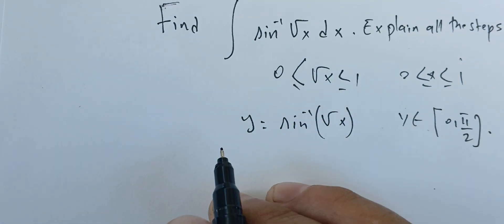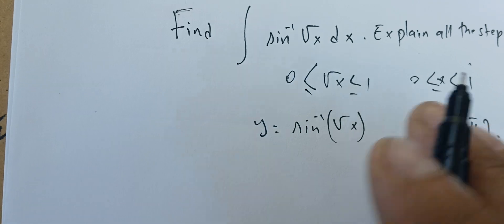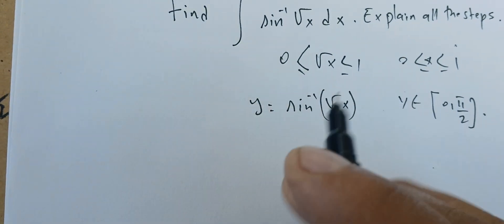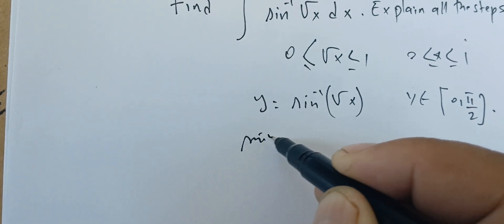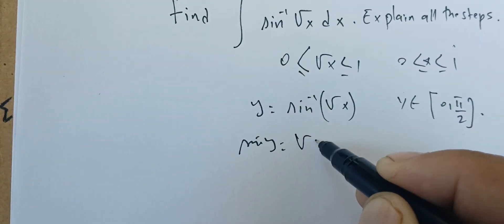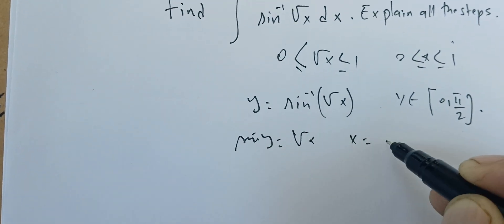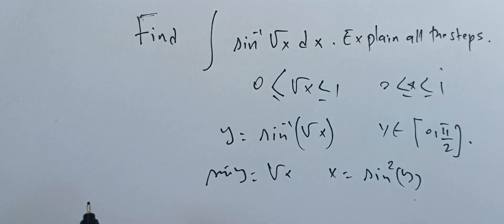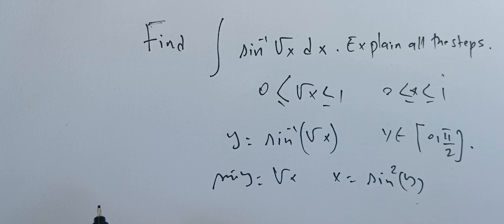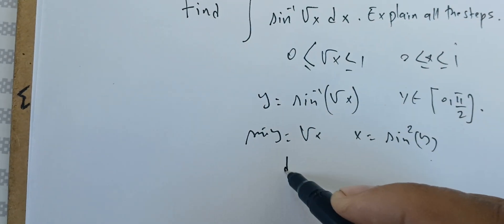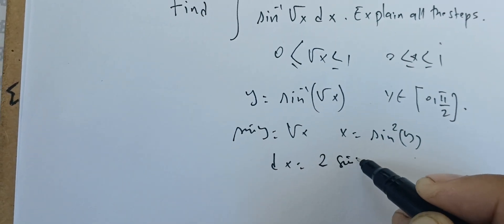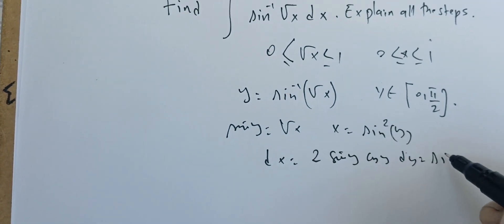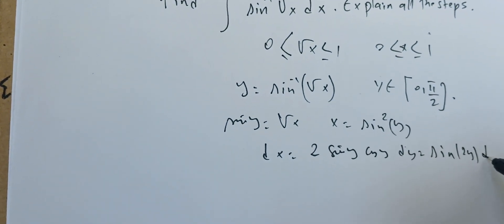We can take the inverse: sin(y) = √x, and therefore x = sin²(y). To find dx, we differentiate and get dx = 2sin(y)cos(y) dy, which is just sin(2y) dy.